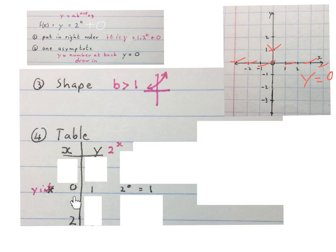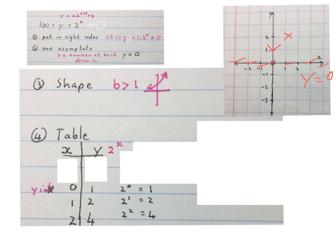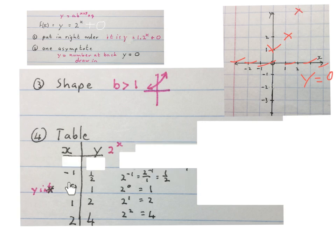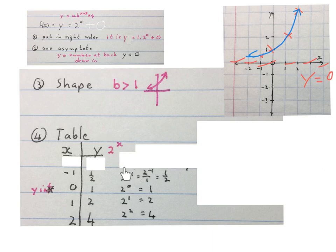Substitute x = 1 into the equation and get y = 2, giving coordinate (1, 2). Replace x with 2 and get y = 4. We can see from left to right the graph is increasing. Then choose a smaller value, x = -1. Plug it in, work it out using negative exponents, and get y = 1/2. So coordinate (-1, 1/2). Plot it and you can see the graph runs just above the asymptote, going up with arrows on both sides. Stop the video and understand how the table helped find the graph.